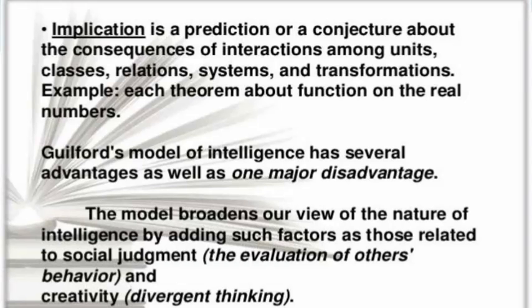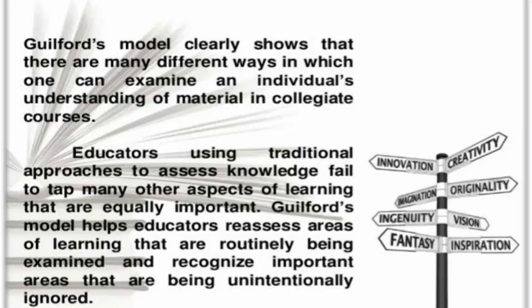Guilford's model of intelligence has several advantages as well as one major disadvantage. The model broadens a view of the nature of intelligence by adding such factors as those related to social judgment, the evaluation of other behavior and creativity, that is divergent thinking. Guilford's model clearly shows that there are many different ways in which one can examine an individual's understanding of material in collegiate courses.